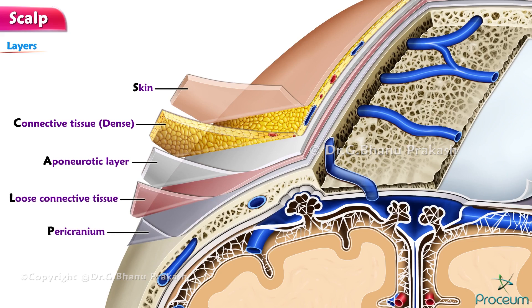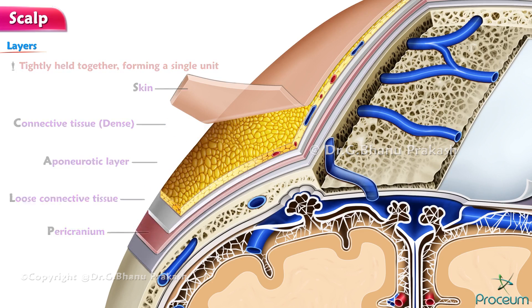Examining the layers of the scalp reveals that the first three layers are tightly held together, forming a single unit. Skin.